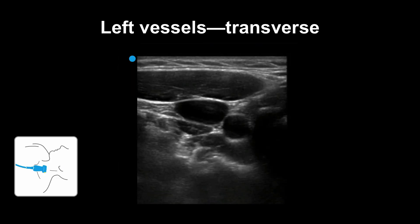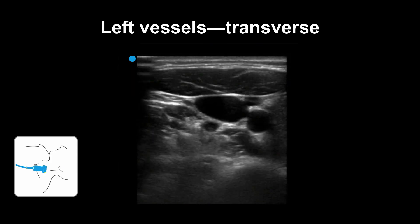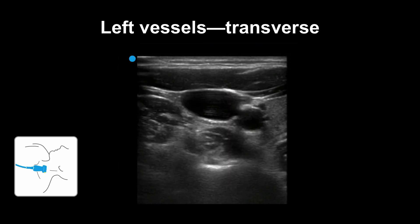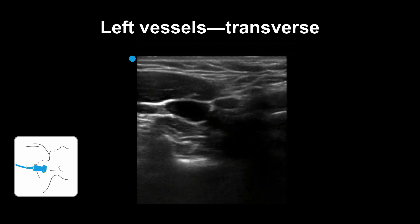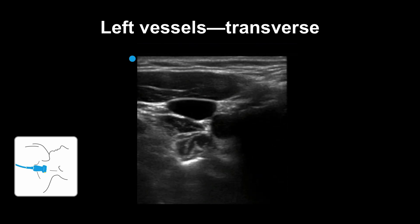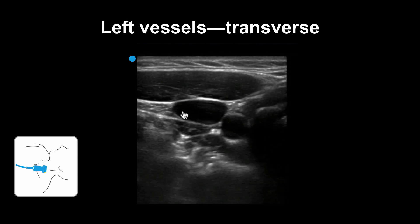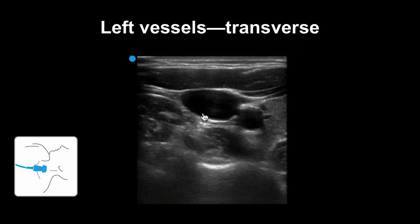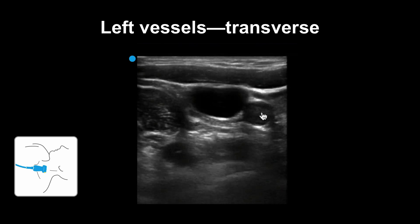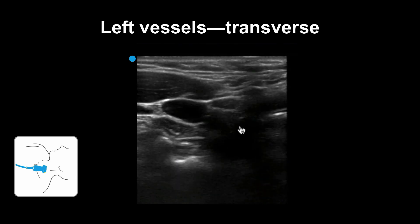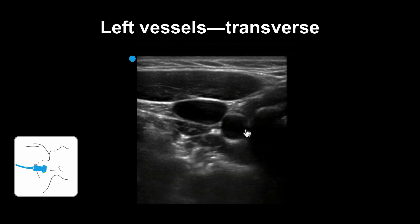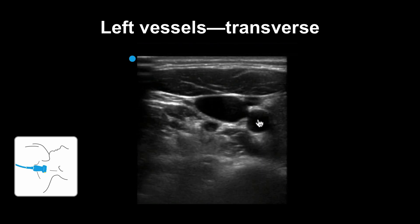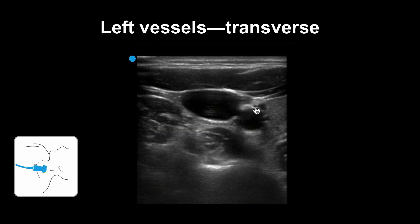Here you can see the relationship between the internal jugular vein and carotid artery on the left side of the neck. Here is the vein, more oval and thin-walled, compared to the artery, which appears medial, more round, with a thicker wall.